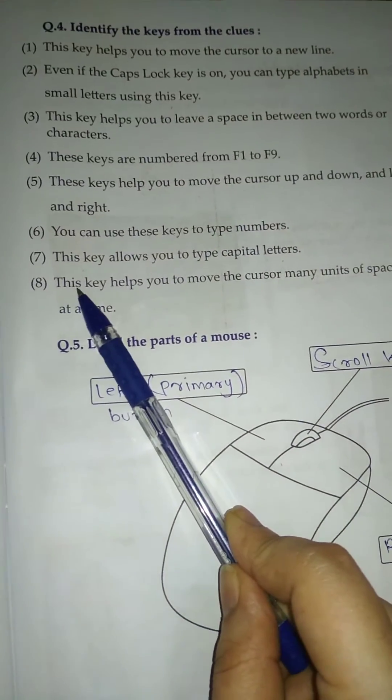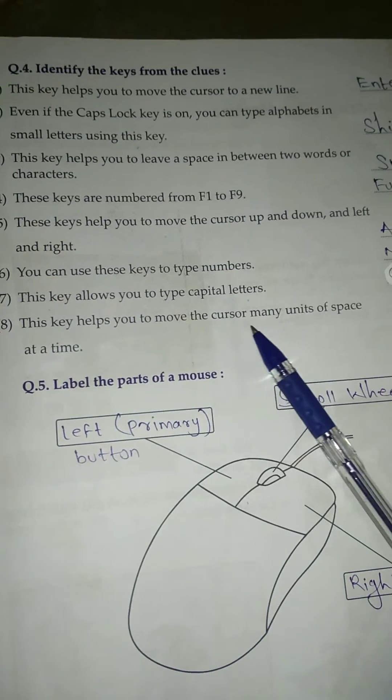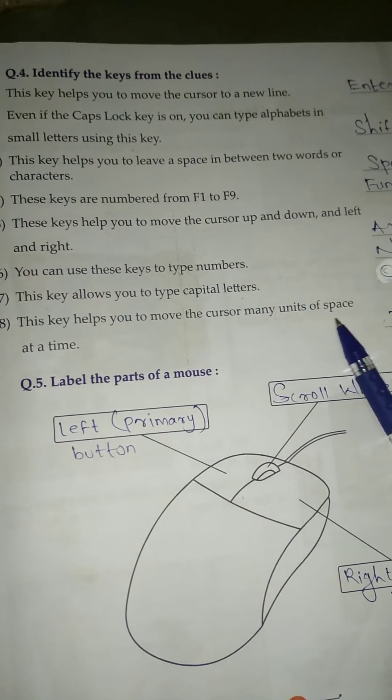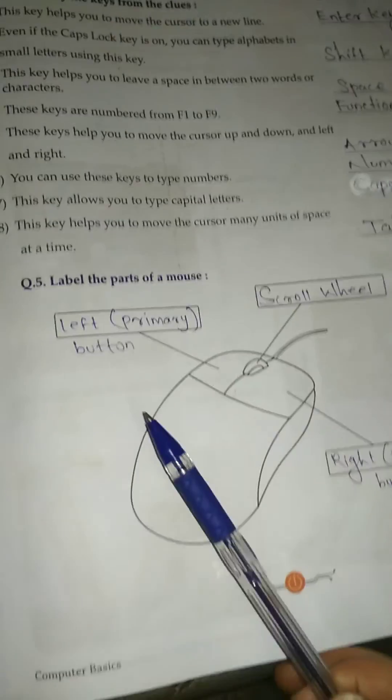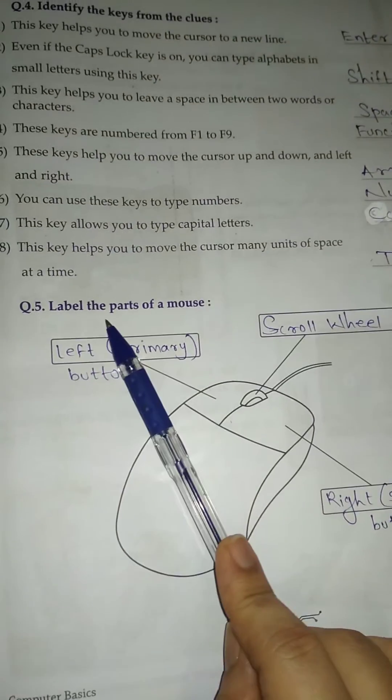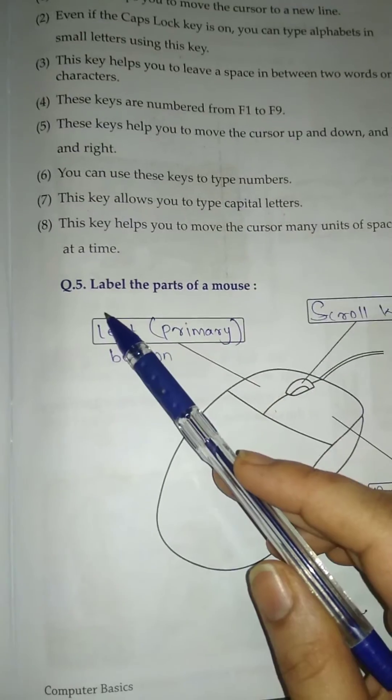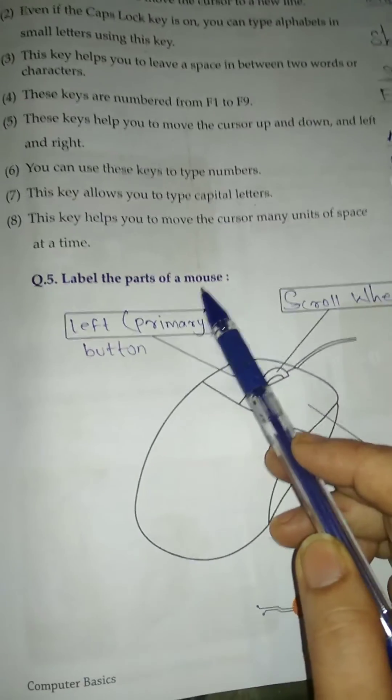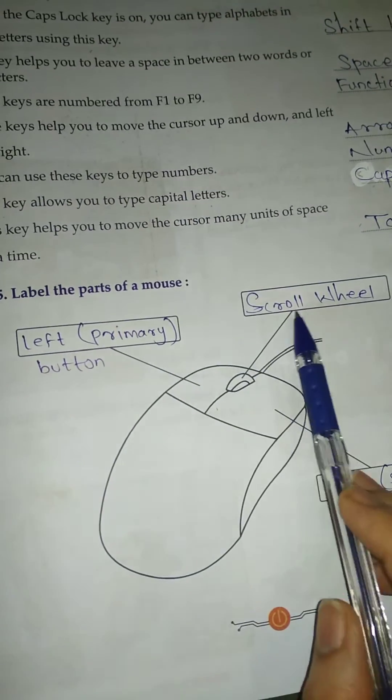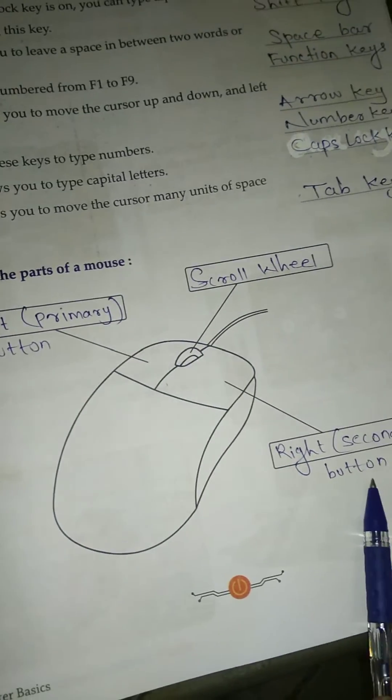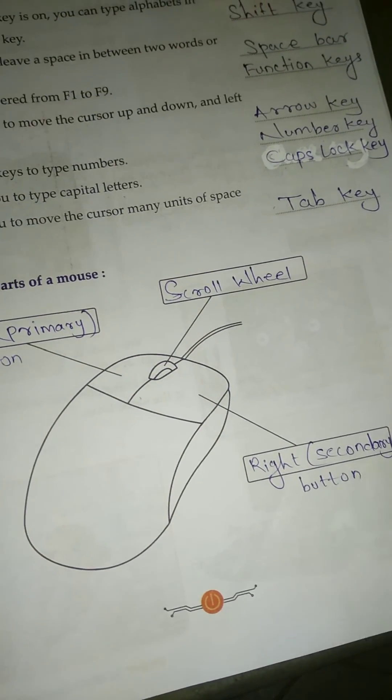Number 8, this key helps you to move the cursor many units of space at a time - Tab Key. Question Number 5: Label the parts of a mouse. Left Primary Button, Scroll Wheel, Right Secondary Button.